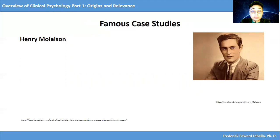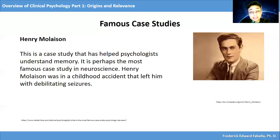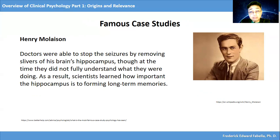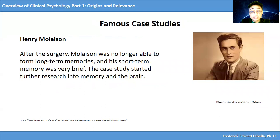Let's consider the case of Henry Molaison. This is a case study that helped psychologists understand memory — it is perhaps the most famous case study in neuroscience. Henry Molaison was in a childhood accident that left him with debilitating seizures. Doctors were able to stop the seizures by removing slivers of his brain's hippocampus, though at the time they did not fully understand what they were doing. As a result, scientists learned how important the hippocampus is to forming long-term memories. After the surgery, Molaison was no longer able to form long-term memories, and his short-term memory was very brief. The case study started further research into memory and the brain.